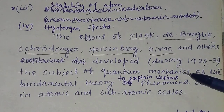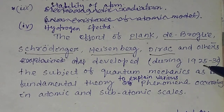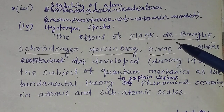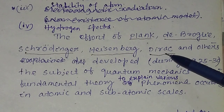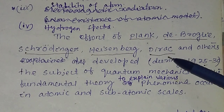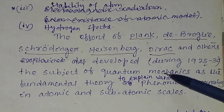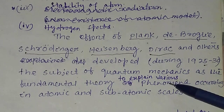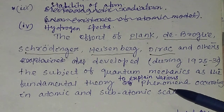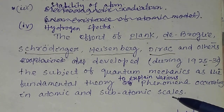During 1925 to 1930, the efforts of Planck, de Broglie, Schrödinger, Heisenberg, Dirac, and others developed the subject of quantum mechanics as a fundamental theory to explain various phenomena occurring at atomic and subatomic scales.